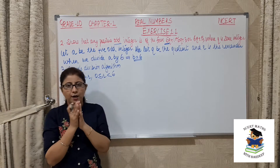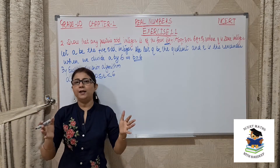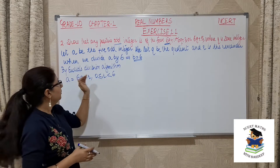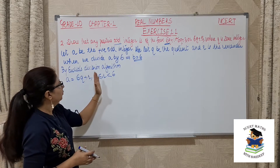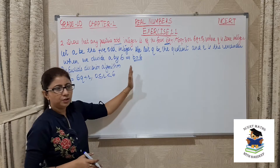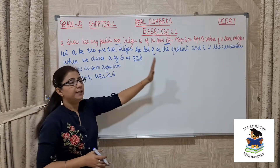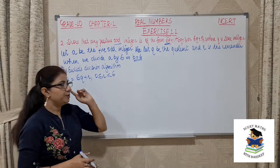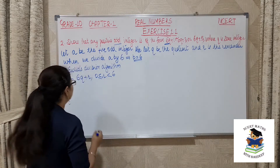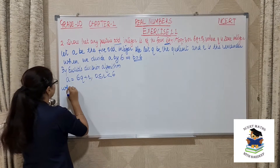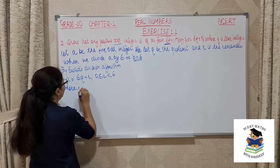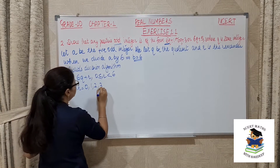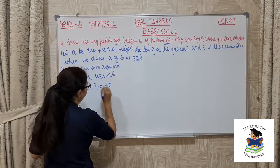The next step is to check what are the possible values of R. According to this, the minimum value of R is 0. So R can be 0, 1, 2, 3, 4, or 5. It cannot be equal to 6 because R should always be less than 6.